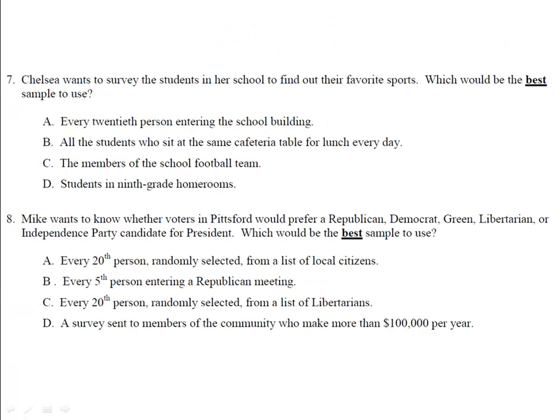In example 7, Chelsea wants to survey the students in her school to find out what their favorite sports are — which would be the best sample to use? We have four choices: every 20th person entering the school building, all students who sit at the same table during lunch, all members of the football team, and students in 9th grade homerooms. Choice A is best. If we ask every 20th person, we're no longer selecting people who are on a specific sports team, who are in a single grade, or who sit together at lunch and might have similar preferences. In example 8, asking every 20th person selected randomly from a list of people in Pittsburgh would be the best way to find this information out.